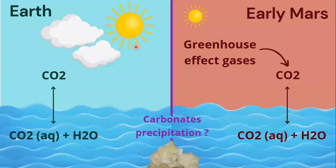So first, on Earth, because of the interaction between the atmosphere and the surface water, CO2 can react with water and generate carbonic acid, bicarbonate, and carbonate. Those species react with other ions that are in water and precipitate minerals which are called carbonates.